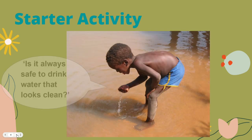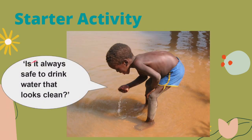For our starter activity, look at this boy. He is the same age as you. If this dirty water was all he had to drink, what would he do? This boy lives near a river in Ethiopia who does not have clean running water and cannot easily buy bottled water to drink. What could the people do to make the water clean?